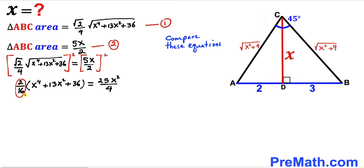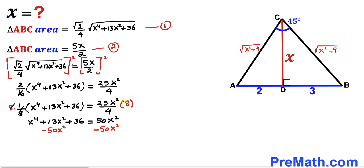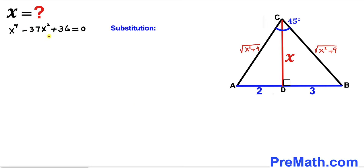We note that 2/16 simplifies to 1/8. Multiplying both sides by 8 eliminates the fraction, giving x⁴ + 13x² + 36 = 50x². Subtracting 50x² from both sides gives x⁴ − 37x² + 36 = 0.